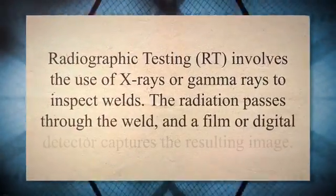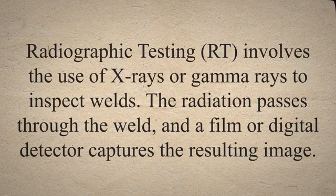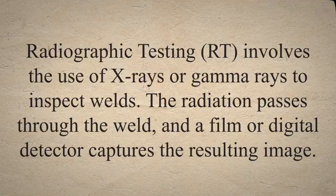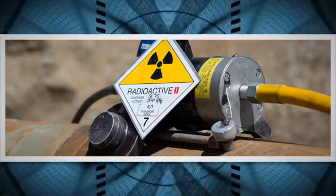Radiographic testing, RT, involves the use of X-rays or gamma rays to inspect welds. The radiation passes through the weld, and a film or digital detector captures the resulting image. This image, known as a radiograph, shows the internal structure of the weld, including any defects. RT provides a comprehensive view and is particularly effective in detecting volumetric flaws such as voids or inclusions. However, it requires specialized equipment and trained personnel to ensure safety.